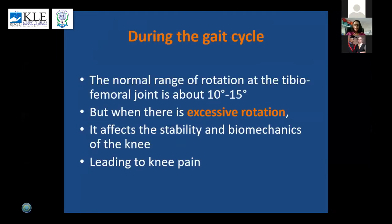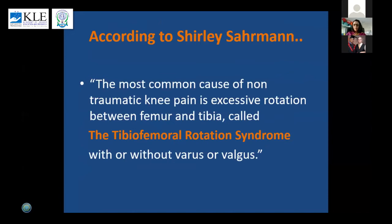Whereas in the closed kinetic chain, the femur rotates internally during knee extension and externally during knee flexion. During the gait cycle, the normal range of rotation at the tibiofemoral joint is about 10 to 15 degrees. But when there is excessive rotation at this joint, it affects the stability and biomechanics of the knee leading to knee pain. According to Shirley Sahrmann, a pioneer in movement impairment syndromes, the most common cause of non-traumatic knee pain is excessive rotation between the femur and tibia — she calls it the tibiofemoral rotation syndrome.